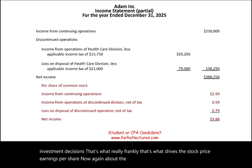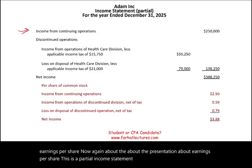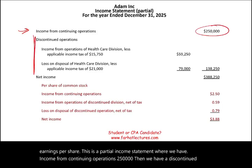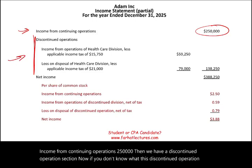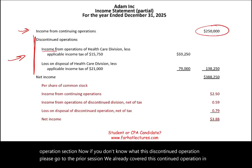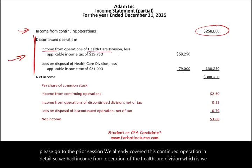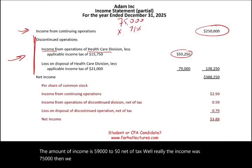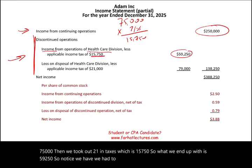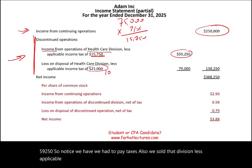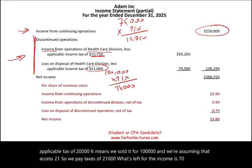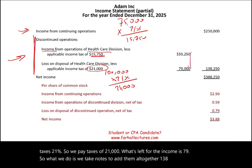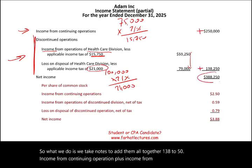Regarding presentation: here is a partial income statement with income from continuing operations of $250,000, followed by a discontinued operations section. The healthcare division — which we discontinued — had operating income of $75,000, less 21% tax of $15,750, giving $59,250 net of tax. We also sold the division for a gain, less applicable taxes of $21,000, leaving $79,000. Adding these together gives $138,250 from discontinued operations, and total net income of $388,250.